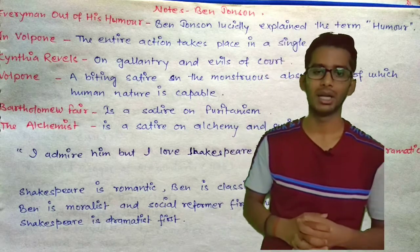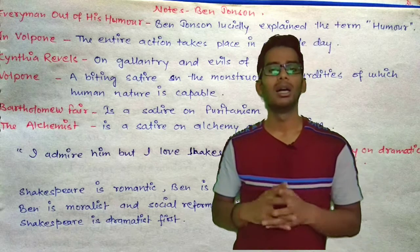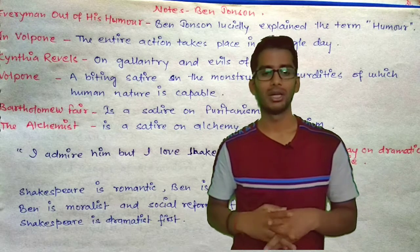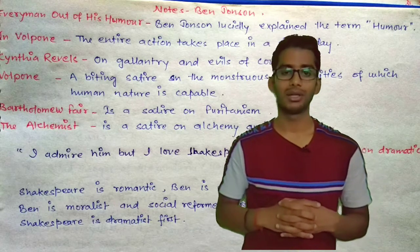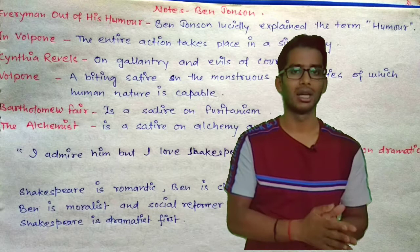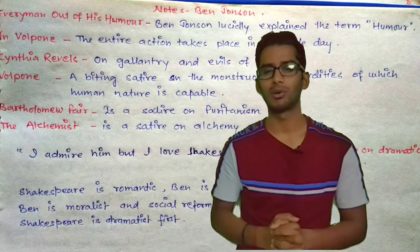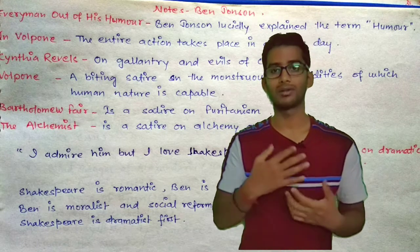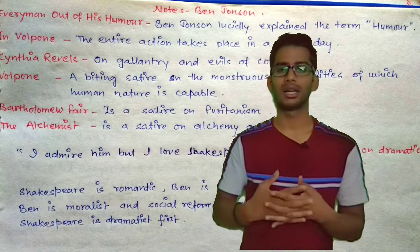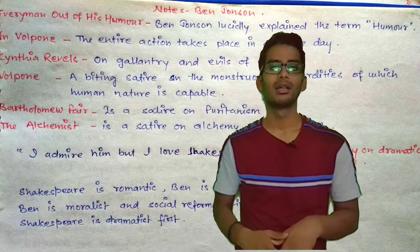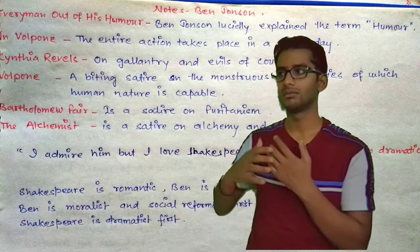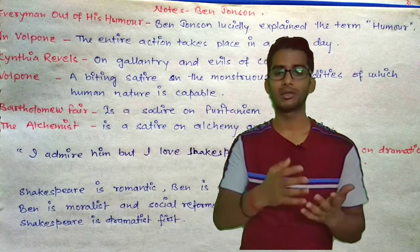The quotation 'I admire him but I love Shakespeare' is by Dryden, and he wrote this in his Essay on Dramatic Poesy. Shakespeare is romantic and Ben Jonson is a classicist. Romantics are those who follow their hearts in their writing — drama, poetry, or anything else. Classicists are those who follow a lot of rules; you can say they follow the ancients.